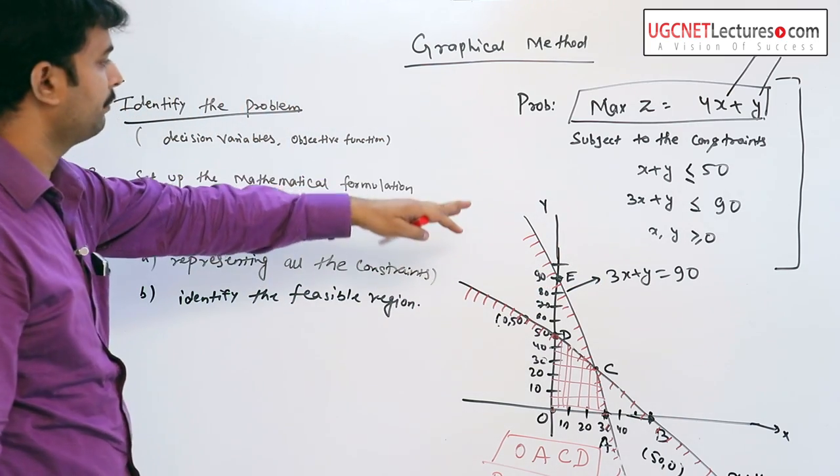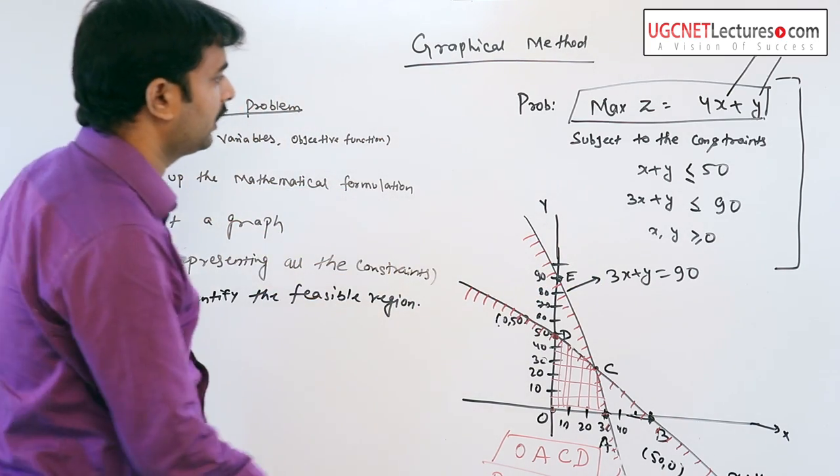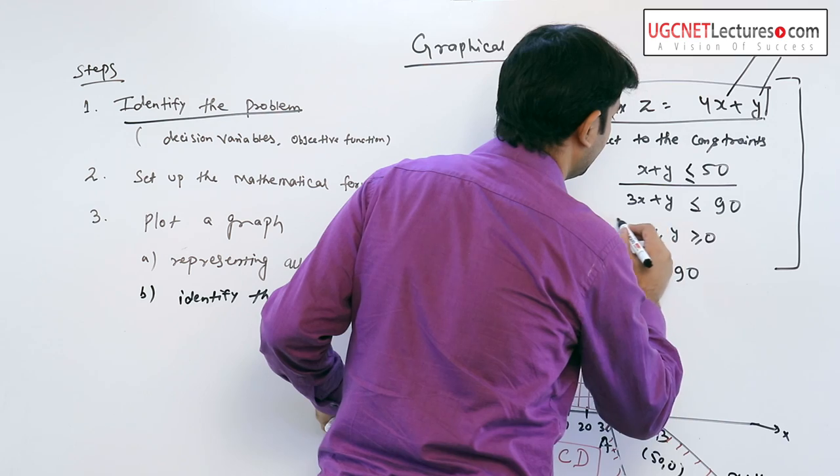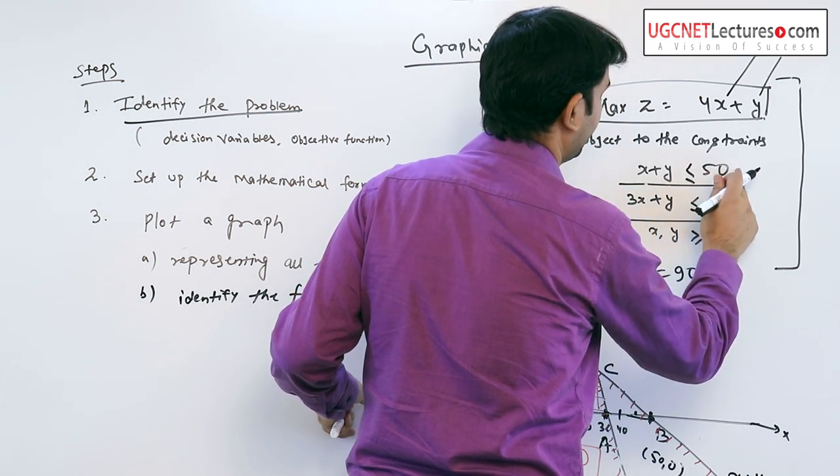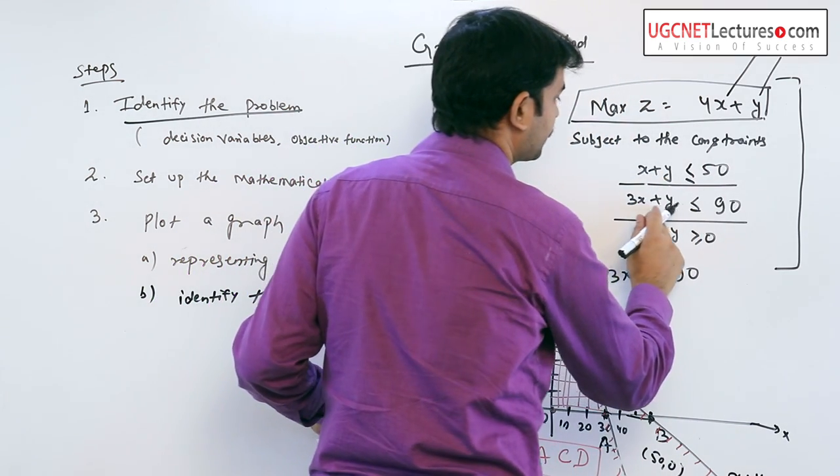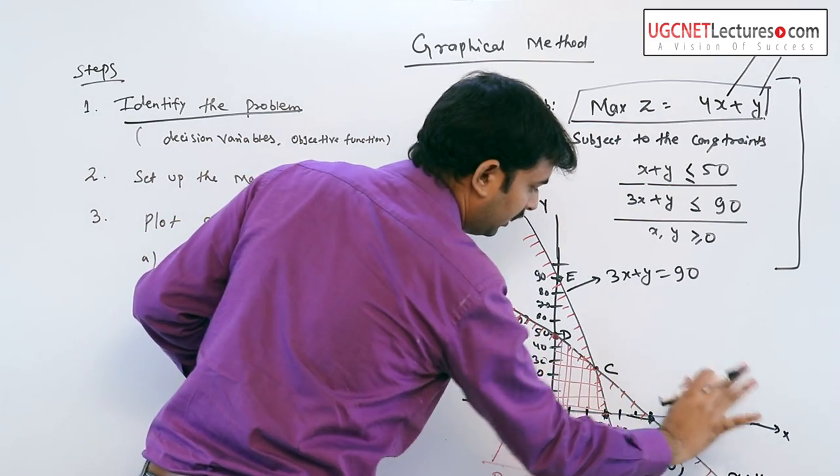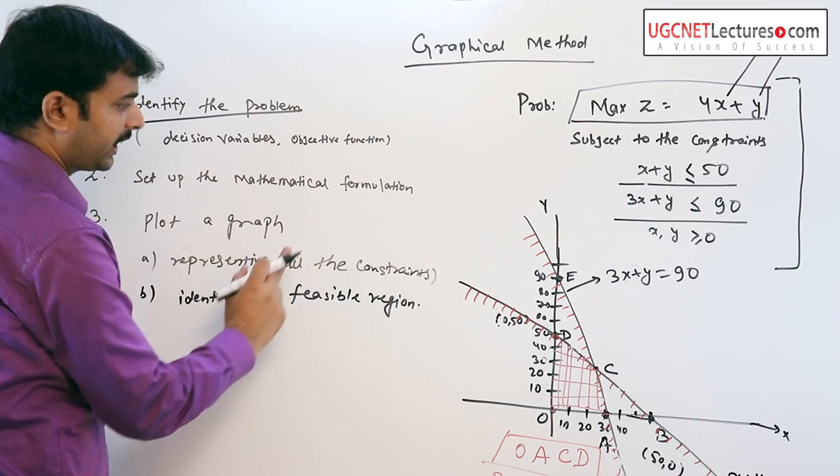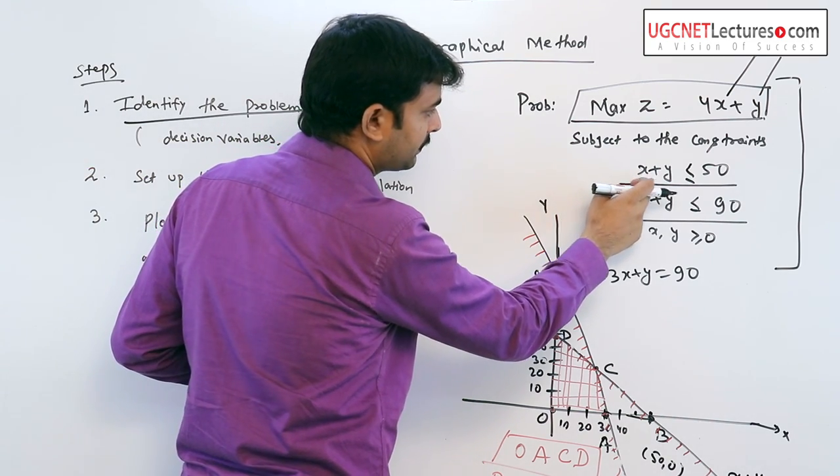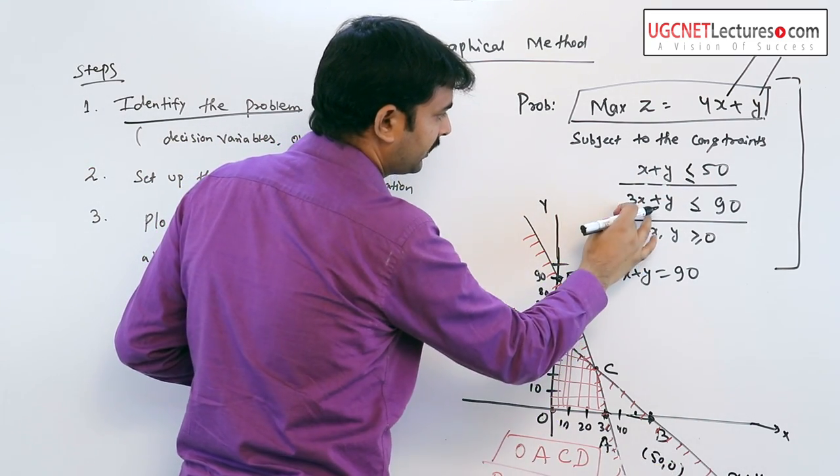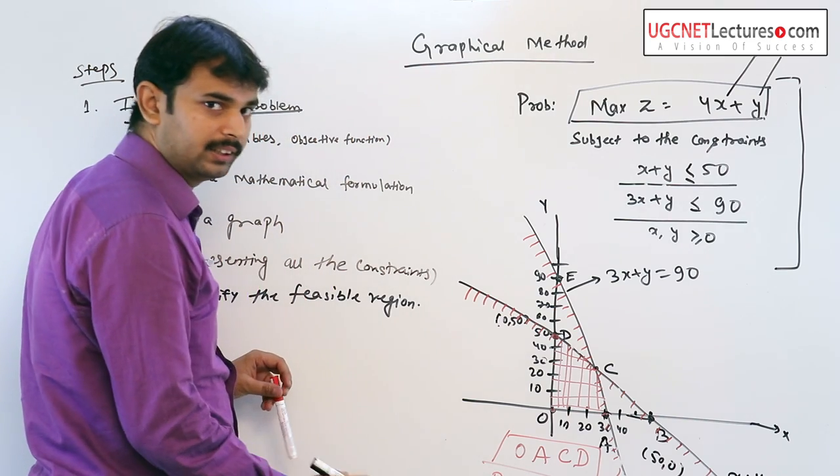...is written in mathematical formulation where the constraints are x+y≤50 and 3x+y≤90. For the third step, we already plotted a graph of the constraints - the lines x+y=50 and 3x+y=90.